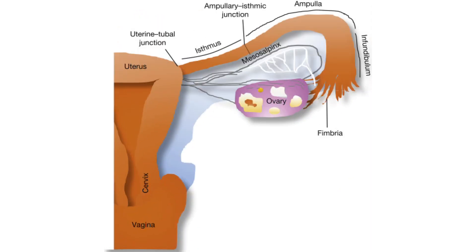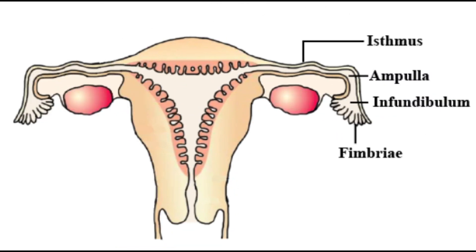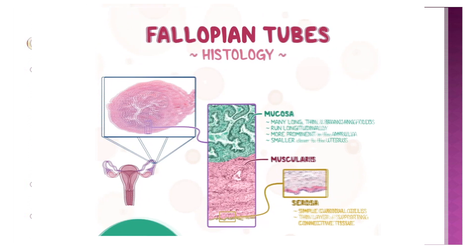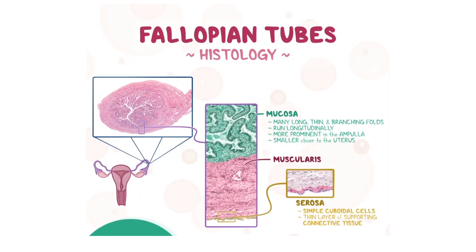Next, we will look at the fallopian tubes. The fallopian tubes are the conduit of oocytes from the ovary to the uterus. Each of the two fallopian tubes is close to but not directly connected to the ovary. The isthmus is the narrow medial end of each uterine tube that connects to the uterus. The wide distal infundibulum flares out with slender finger-like projections called fimbriae. The middle region of the tube, called the ampulla, is where fertilization of the oocyte occurs. The fallopian tubes have three layers: an outer serosa, a middle smooth muscle layer, and an inner mucosal layer. The inner mucosa contains ciliated cells that beat in the direction of the uterus, producing a current critical to moving the oocyte.